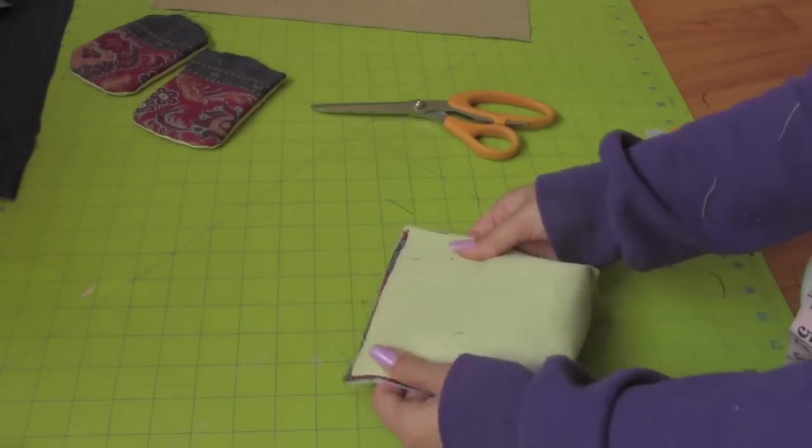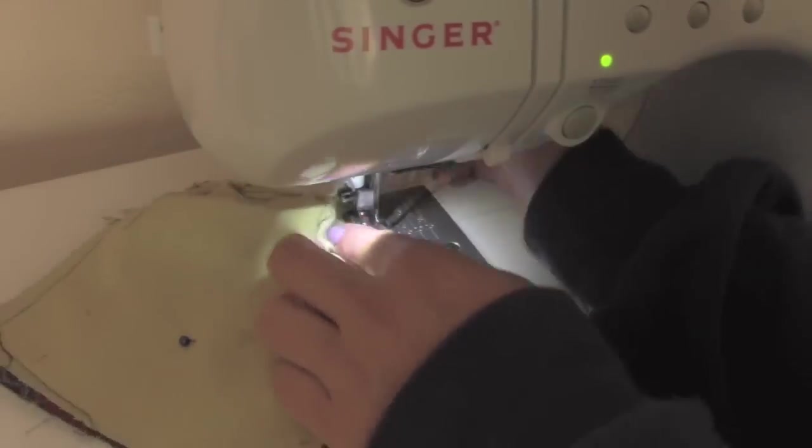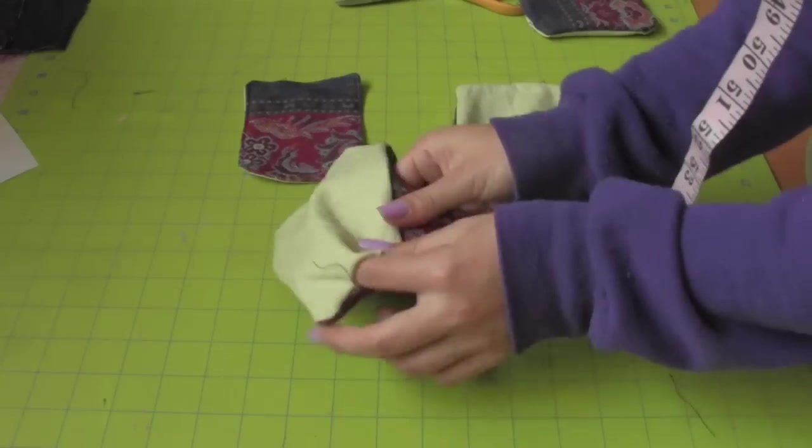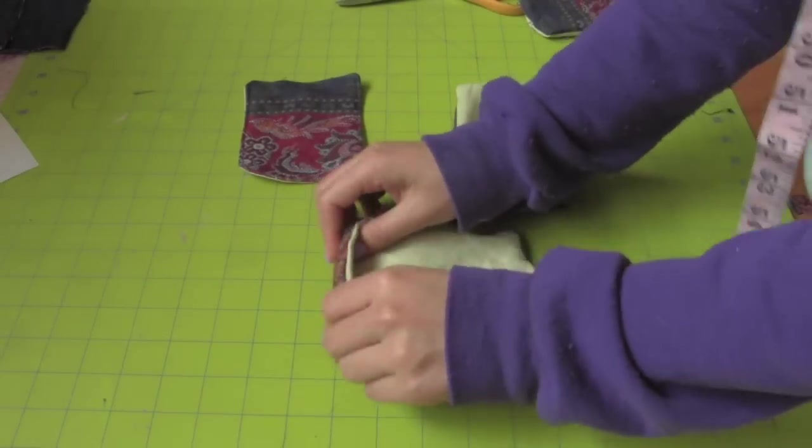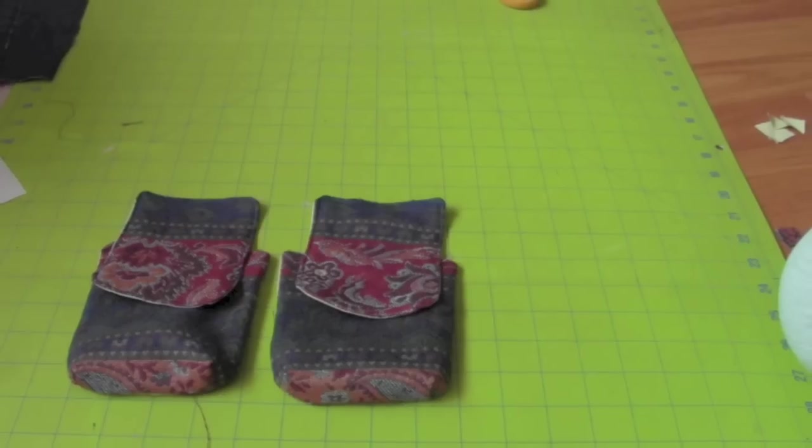Place them right sides together and sew. Don't forget to leave an opening to flip it inside out. For the side pockets you don't have to top stitch the side folds if you don't want to.